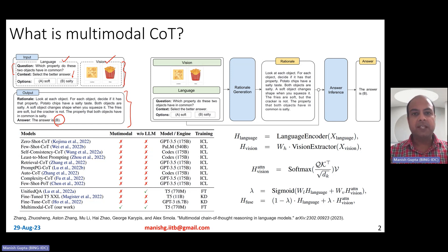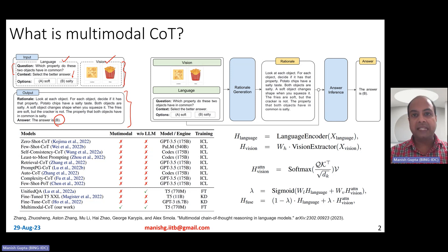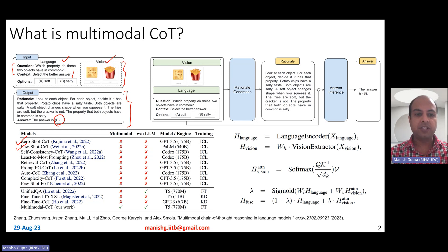Typically, chain of thought has been studied from a text perspective rather than also including images. People have studied chain of thought as a way of generating very accurate answers by prompting the models to first think step by step, generate reasoning steps, and then finally come up with the answer. That's called zero-shot CoT, where you do not supply any exemplars as part of the input prompt. But you can also supply exemplars as part of the prompt — that's called few-shot CoT.